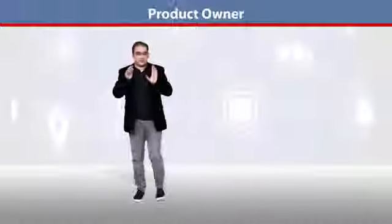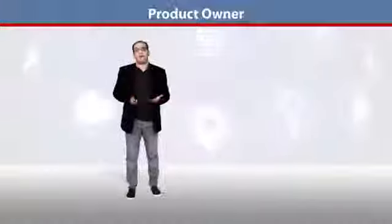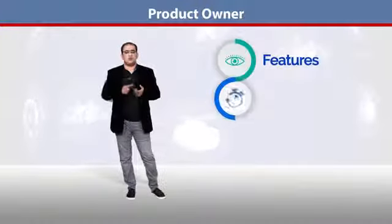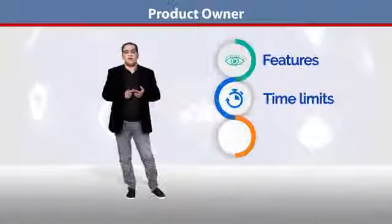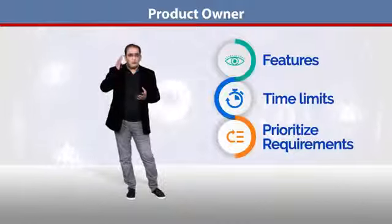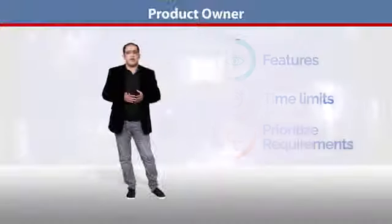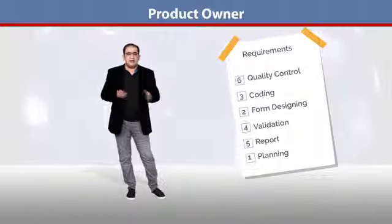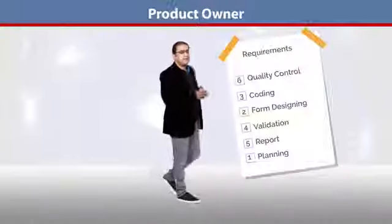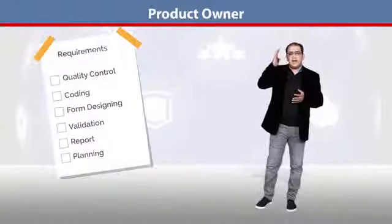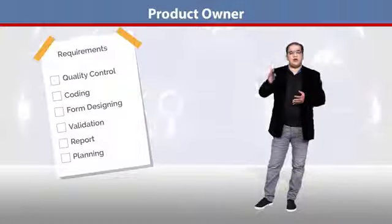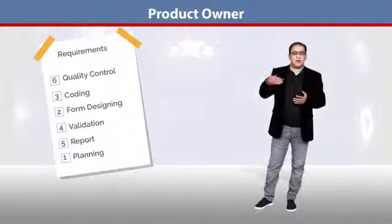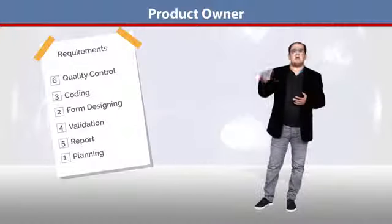The Product Owner tells you which feature, which requirement, is prioritized. For example, if the Product Owner has 6 requirements, the team cannot start all 6 simultaneously. So basically the Product Owner decides which requirement is most important — numbering them by priority — so when development starts, the highest priority requirement is addressed first.